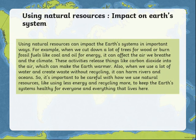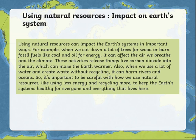Using natural resources can impact the earth's systems in important ways. For example, when we cut down a lot of trees for wood or burn fossil fuels like coal and oil for energy, it can affect the air we breathe and the climate. These activities release things like carbon dioxide into the air, which can make the earth warmer. Also, when we use a lot of water and create waste without recycling, it can harm rivers and oceans. So it is important to be careful with how we use natural resources — like using less energy and recycling more — to keep the earth's systems healthy for everyone and everything that lives here.